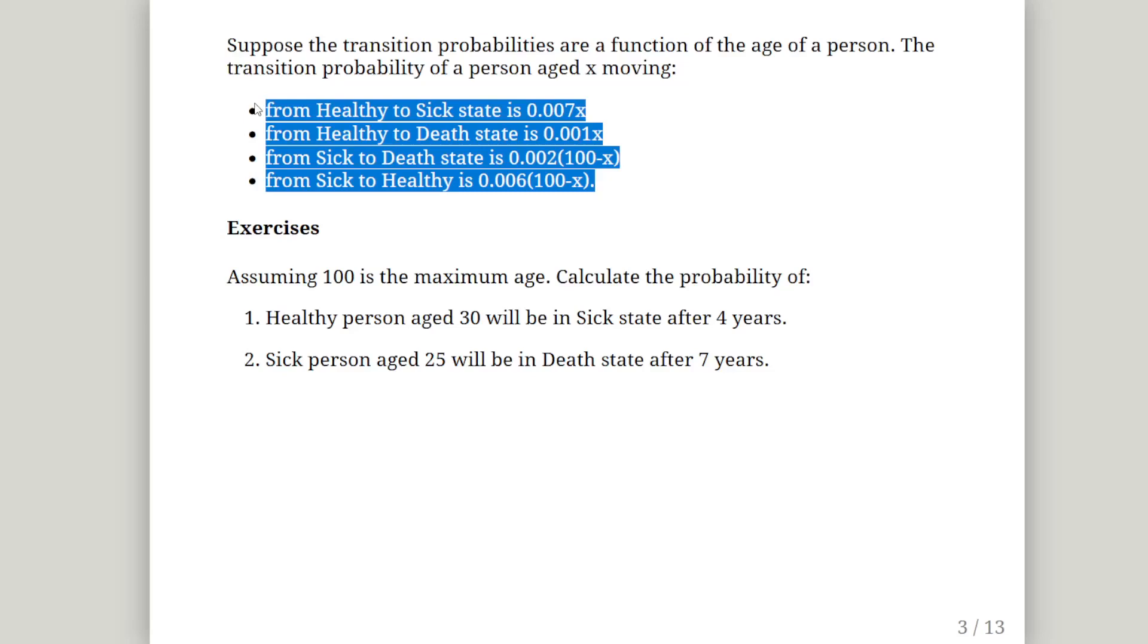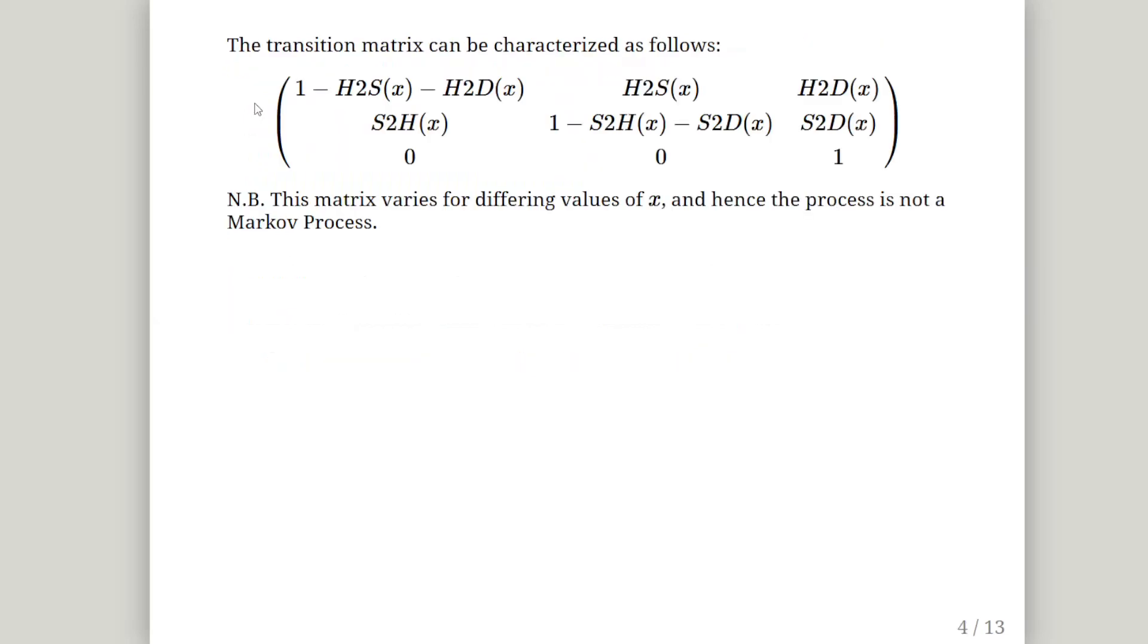So we're going to set up our transition matrix. Now, first off, this is not a Markov process. And the reason is that this matrix will change from year to year, age to age. So it's not consistent.